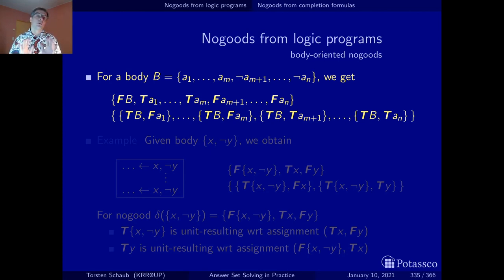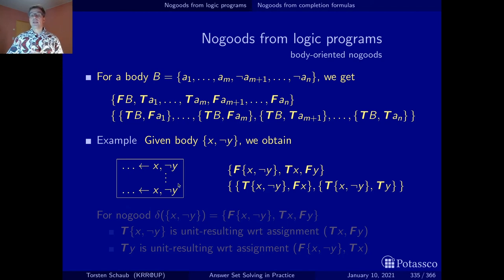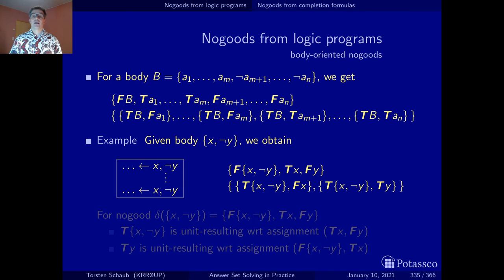Let's see them in action, though not in as much detail as for the atom-oriented no-goods. Here's the example: a body that has two literals — a positive body literal x and a negative body literal not-y — occurring in one or several rules. We get three no-goods. The first says it can't be the case that the body is false but all constituent body literals are true. The second type says it can't be the case that the body is true but one of the body literals has been refuted — either a positive one found false or a negative one whose underlying atom was found true.